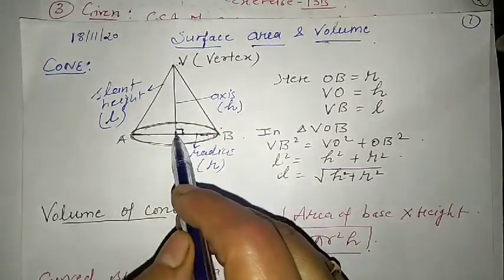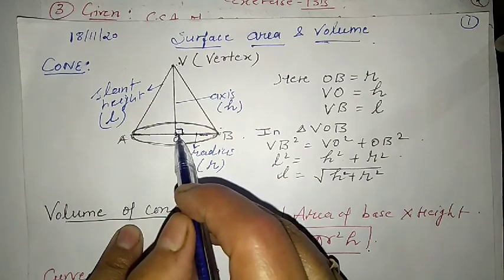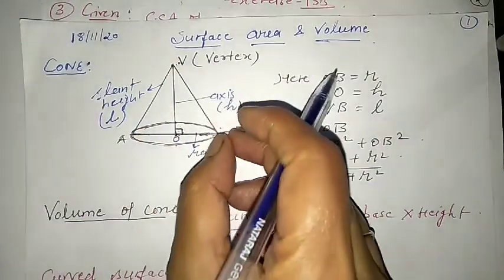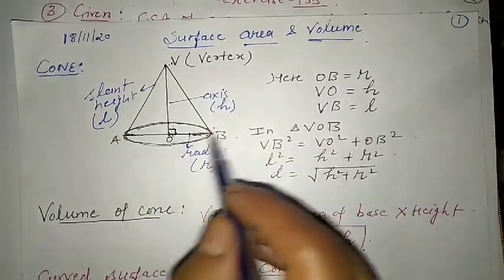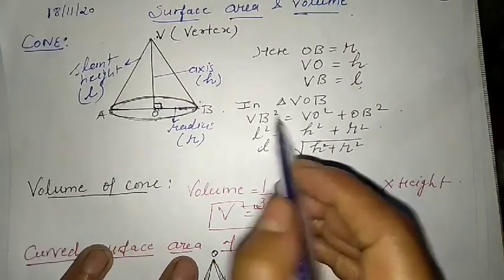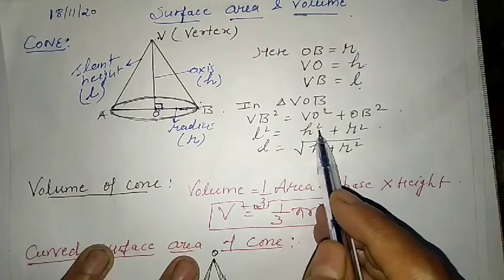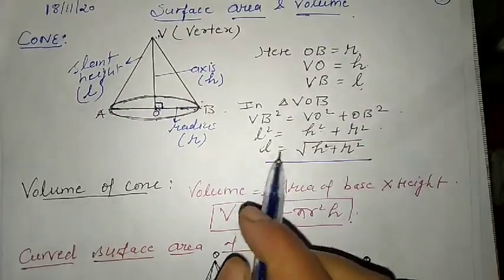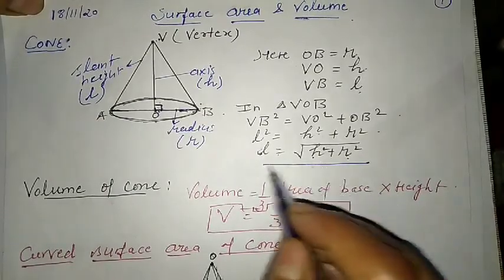If we take this triangle and rotate it around the VO axis, the figure so formed is known as the cone. Here OB equals r, VO equals h, and VB equals l. In triangle VOB, by Pythagoras theorem: VB² = VO² + OB², that is l² = h² + r², so l = √(h² + r²). This is the relation between slant height, height, and radius of the cone.